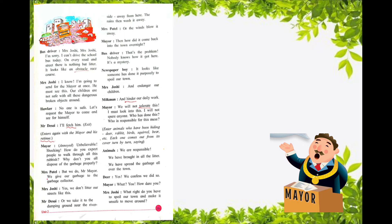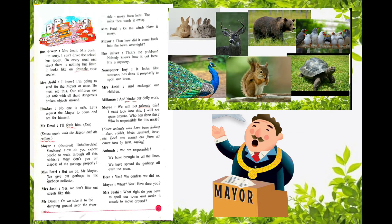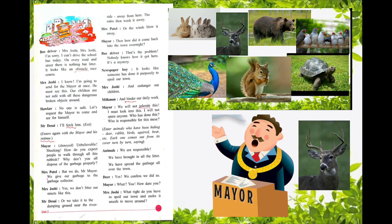Then all of a sudden, the animals entered. The deer, rabbit, birds, squirrel and bear each came out from their cover one by one. All the animals said, 'We are all responsible. We made all these things. We brought the garbage from our forest and spread all this garbage on the street. We have spread the garbage all over the town.'